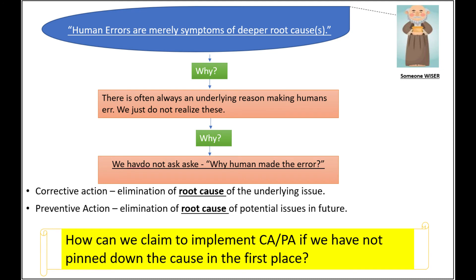When we really think about it, we will see that human errors are merely symptoms of deeper root causes. That's because there is often always an underlying reason making humans err — we just do not realize these. And why is that? That's because we have not asked the question: what made the human make the error?